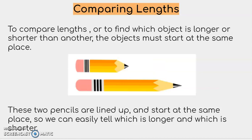To compare lengths accurately, or to find which object is longer or shorter than another, the objects must start at the same place. These two pencils are lined up and start at the same place, so we can easily tell which is longer and which is shorter.